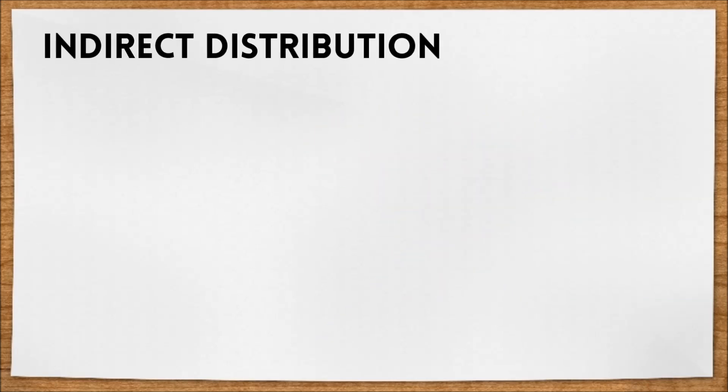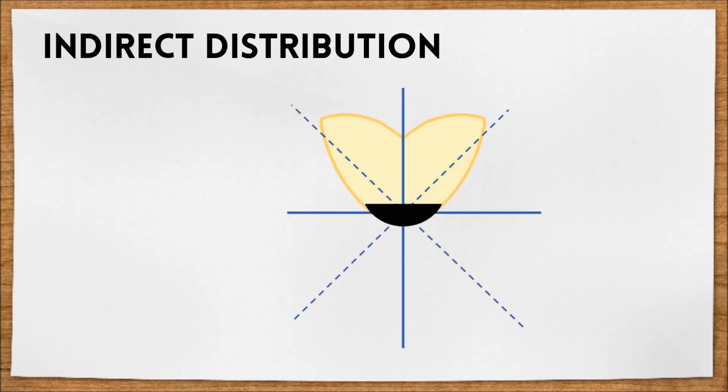And indirect distribution, shown like this, directs 90 to 100% of the light upward toward the ceiling.